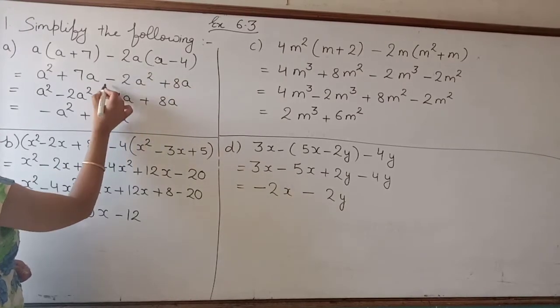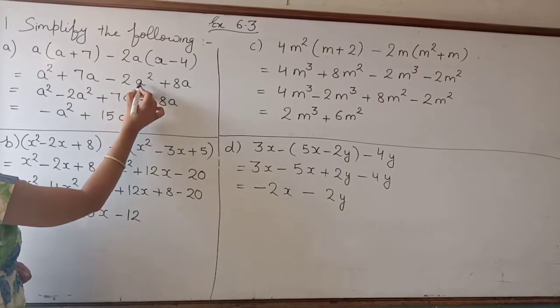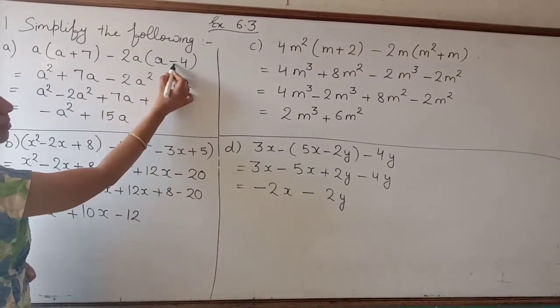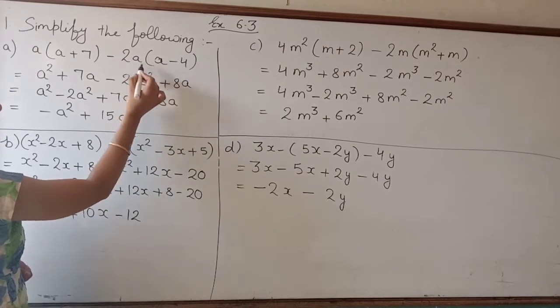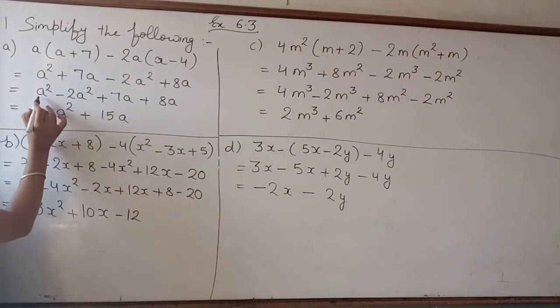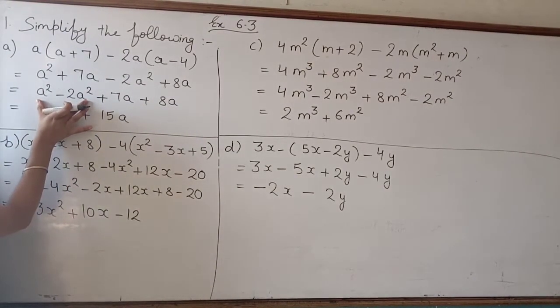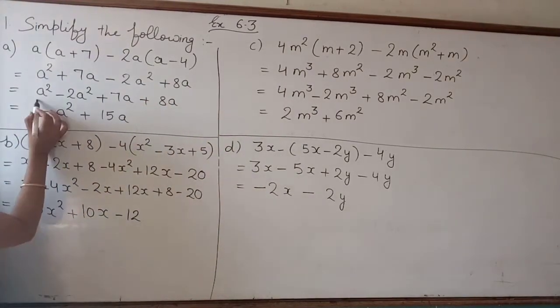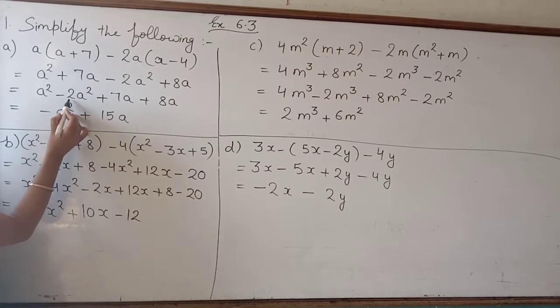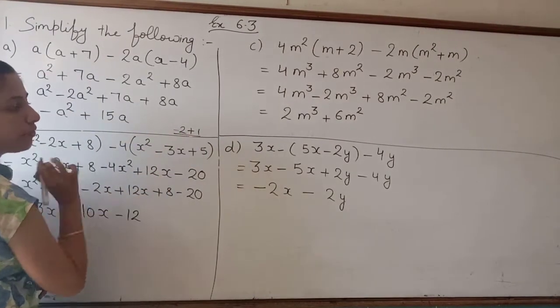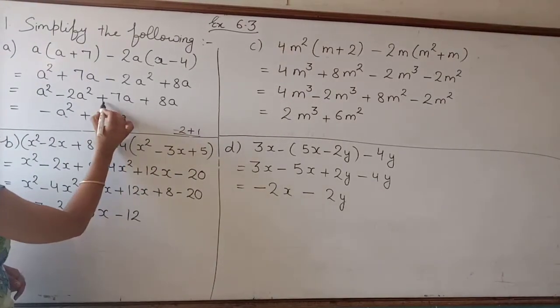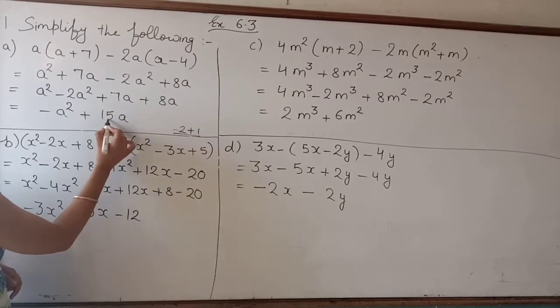a² + 7a - 2a² - 2a times -4. That becomes a² + 7a - 2a² + 8a. Combining like terms: one minus 2 is -1, so -a². For the a terms: 7a + 8a is 15a. So the answer is -a² + 15a.